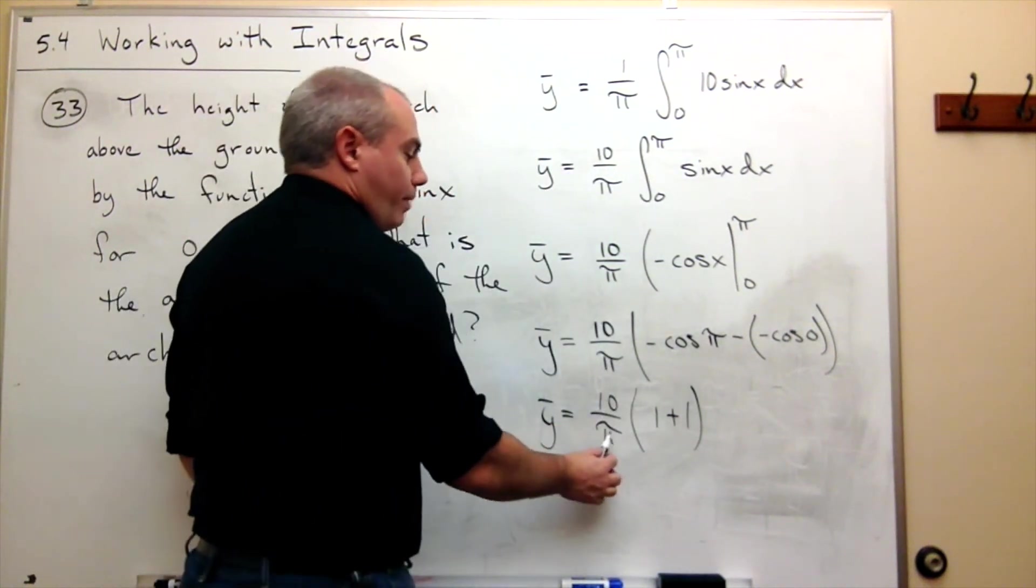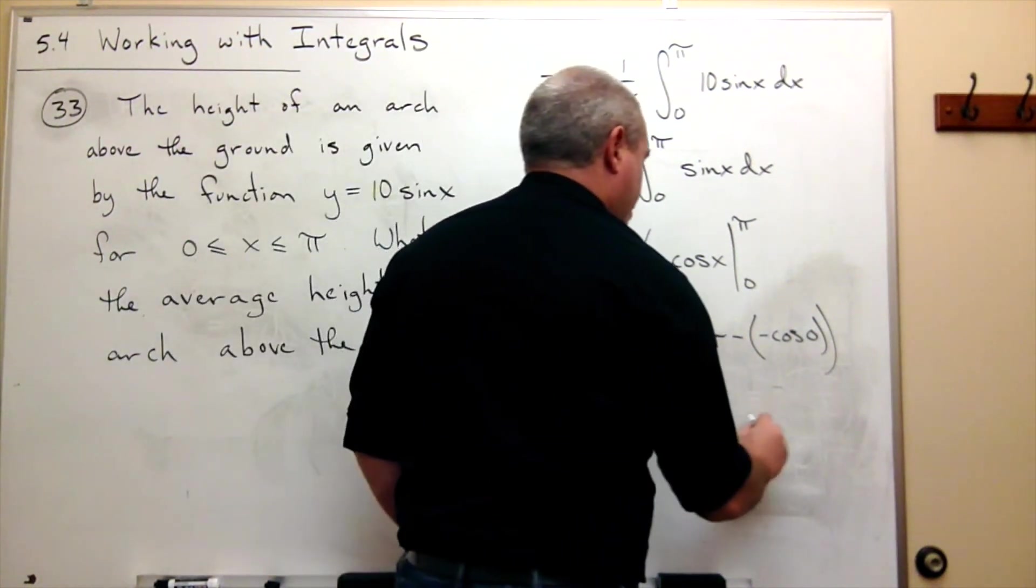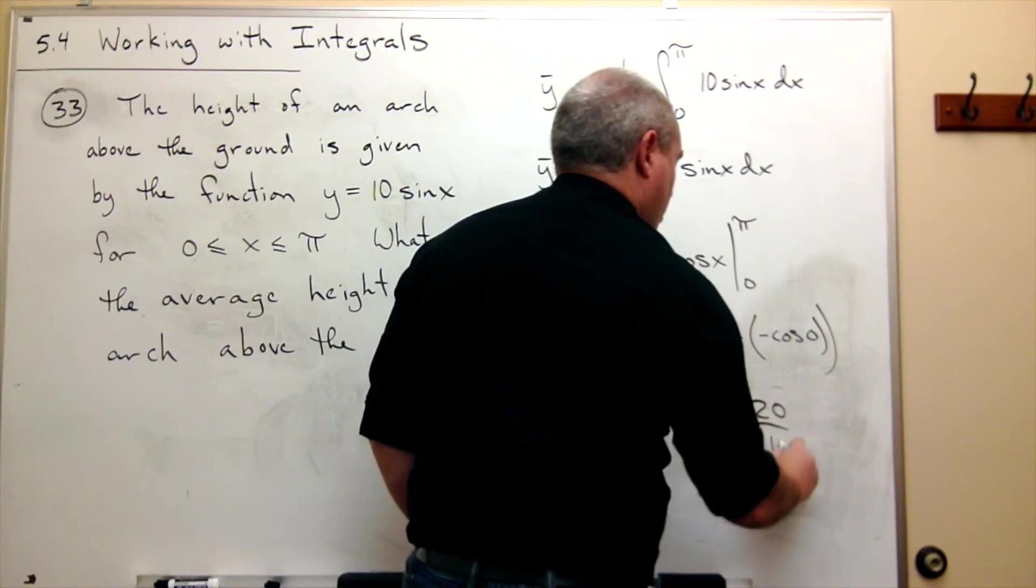So we get 10 over pi times 2, which is 20 over pi.